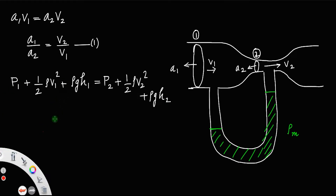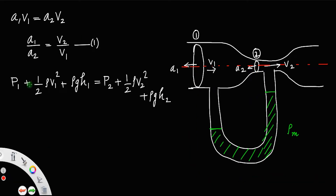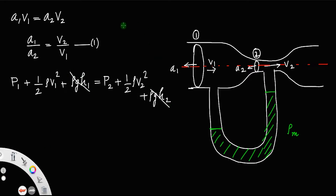Since both cross sections are on the same horizontal level, taking the ground as reference, H1 equals H2. Therefore, the potential energy terms rho·g·H1 and rho·g·H2 cancel out on both sides.